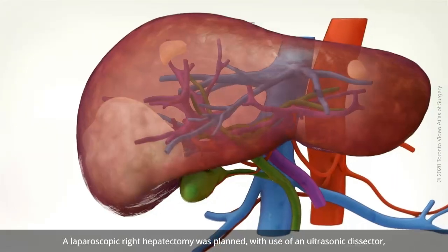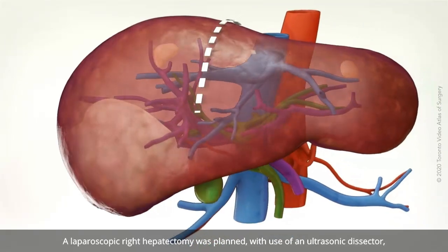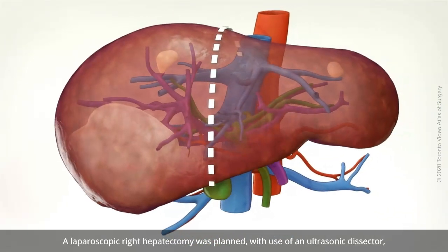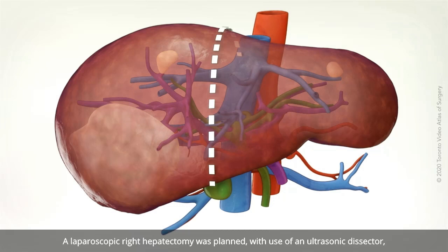A laparoscopic right hepatectomy was planned, with use of an ultrasonic dissector and intermittent Pringle maneuver during the transection phase.